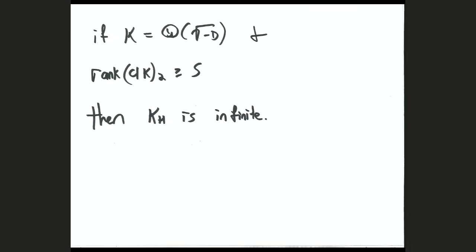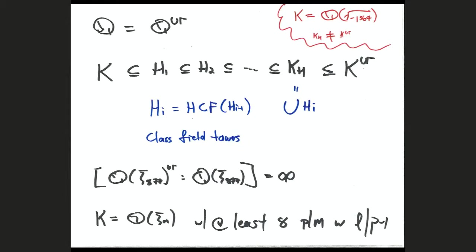If you look at quadratic imaginary fields and look at the 2-part of the class group of K: by Golod-Shafarevich, if the rank of the 2-torsion of the class group of K is at least 5, then K^H is infinite. If it has one, two, or three cyclic factors, it could be infinite or finite. And conjecturally, if the rank is exactly four, in every example we've looked at the class field tower is infinite — though it's only conjectural that rank four always gives infinite class field tower.